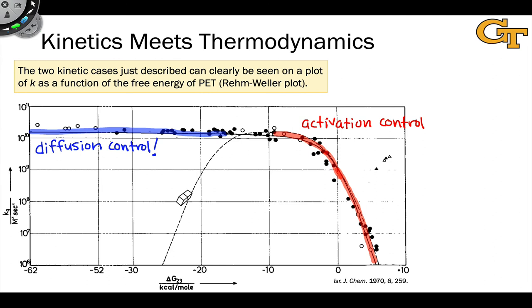Now the dotted line here is going to be of interest to us in the very near future. This dotted line is the prediction of a theory of electron transfer known as Marcus theory, and it's a highly counterintuitive idea.